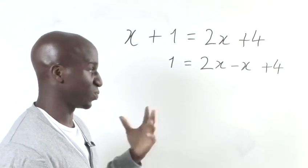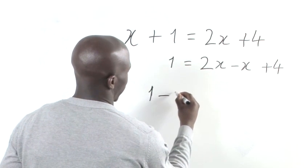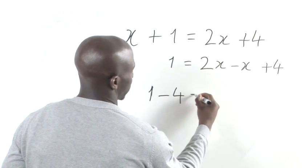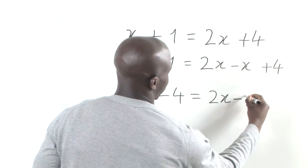So we've got 1 take away 4 equals 2x minus x.